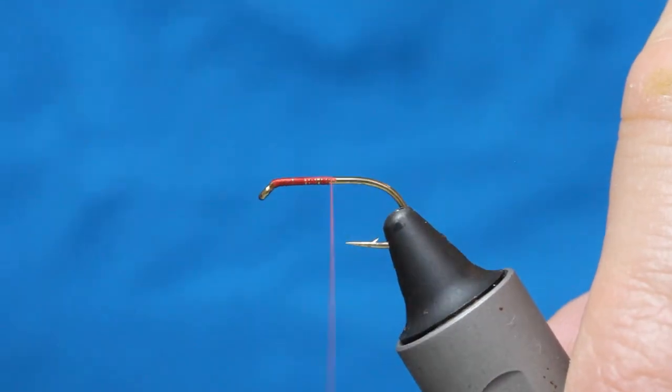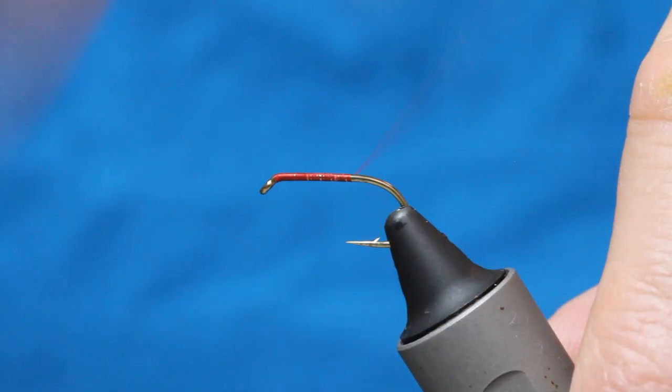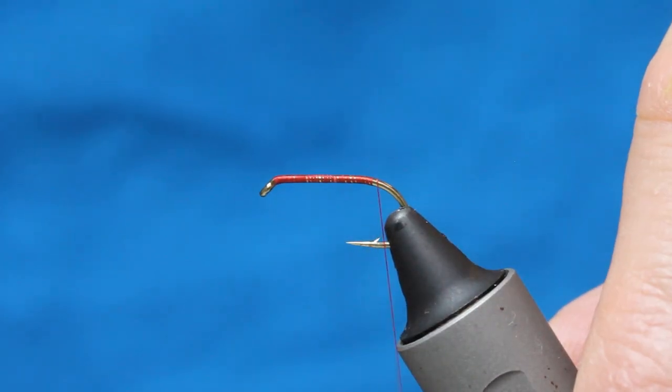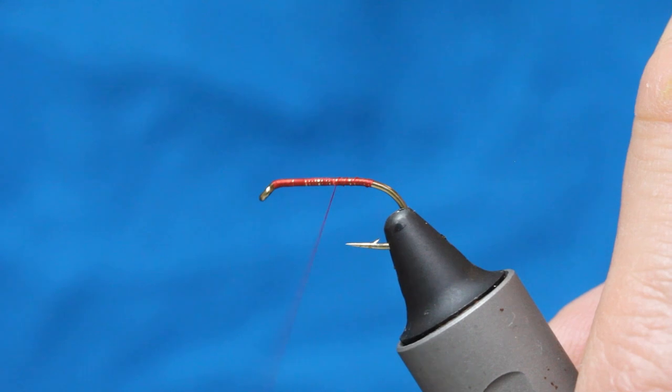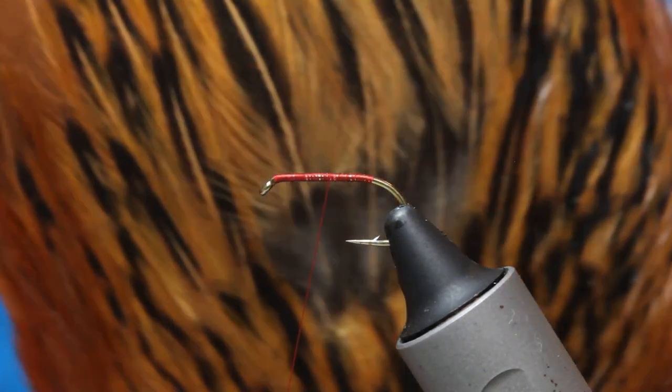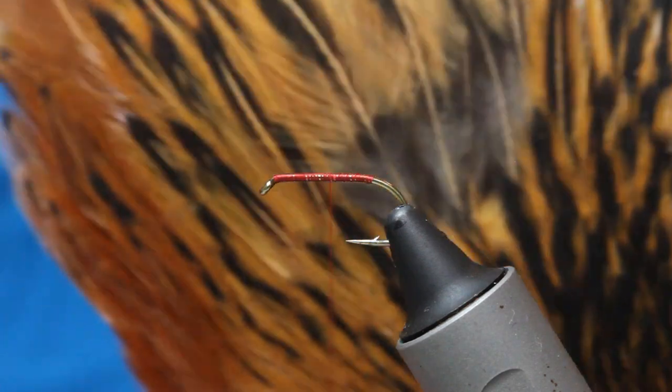So just come down the hook shank, stopping at a point opposite the barb of the hook. Back up in the middle. And then I've got a little cheapy cape. A little bit of the Greenwell's about this.